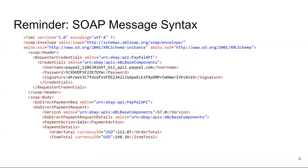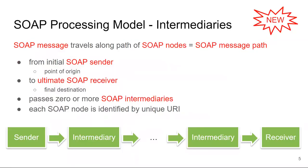Today we are going to complicate things a little bit, because we are going to introduce SOAP intermediaries. The SOAP message can travel along a path of SOAP nodes, where each node is software that implements SOAP. The path from the sender to the receiver with intermediaries in the middle will be called a SOAP message path. The sender will again send the SOAP message, and the receiver will be called an ultimate SOAP receiver — the final destination of that message.